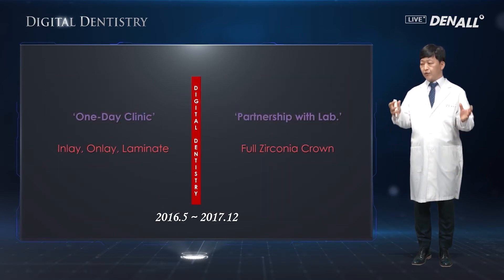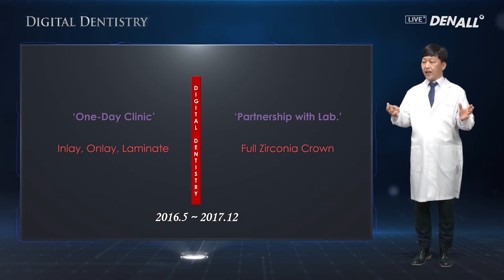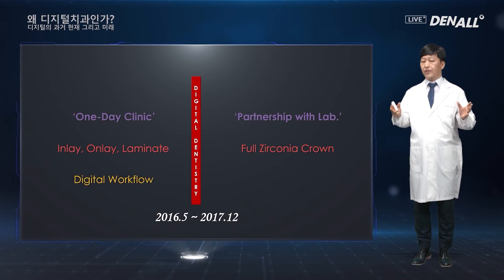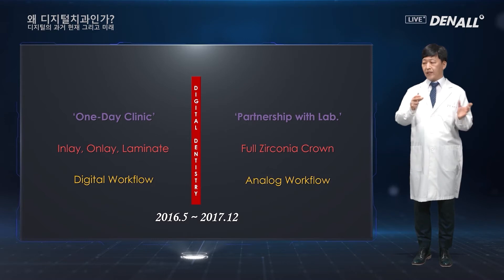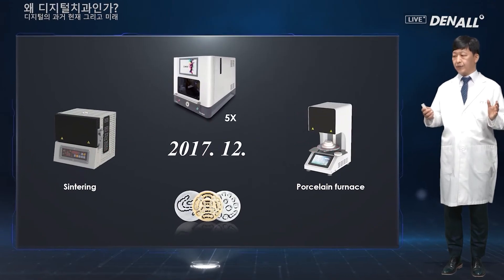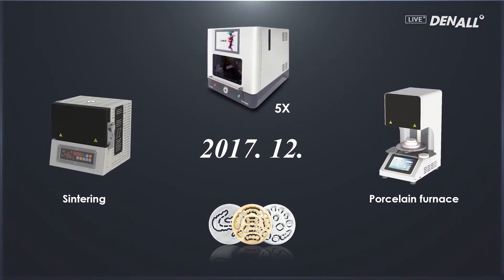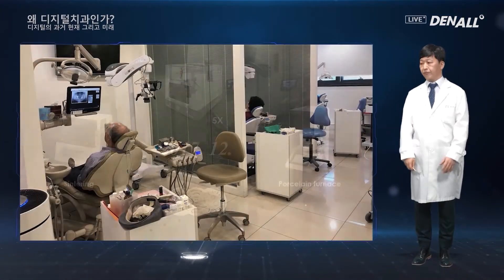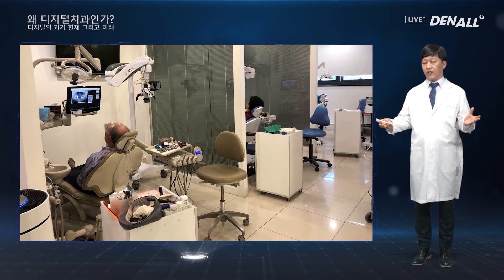The workflow I used from May 2016 to December the following year was that I aimed to provide 1-day treatment for inlay, onlay, and laminate using digital workflow. For full zirconia crown, I worked with a lab technician using analog workflow. In December 2017, I introduced a 5-axis milling machine which can mill the zirconia disc, and adopted a machine for heat treatment. My dental clinic went through a lot of change.